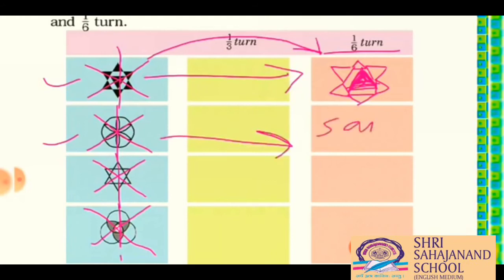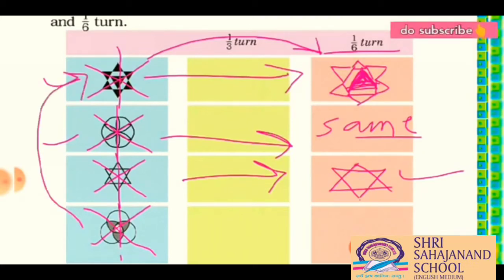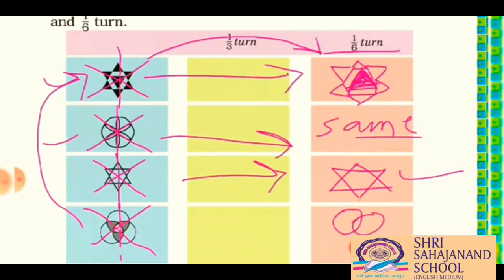Now come to the third picture — it is triangles. In each one-sixth turn here it will look the same, so you can draw it easily. Now at the last picture, you will see that, like the first picture, it will also look opposite. Let me try to draw this — the first circle will be here, the second will be here, and the third will be here.